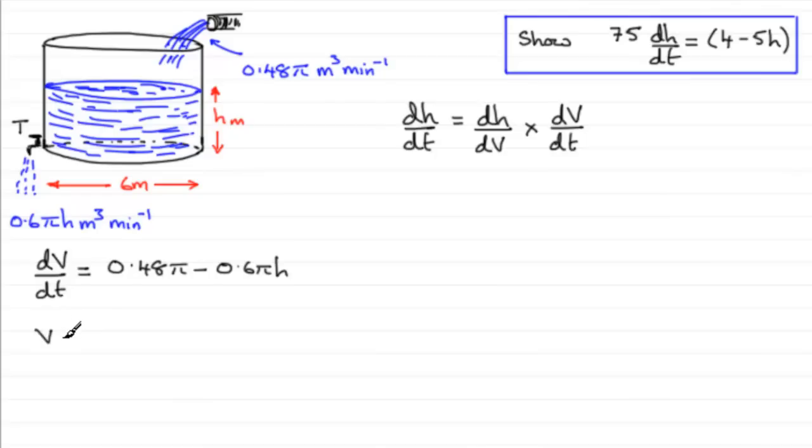And that would be the volume of this blue cylinder if you like. And being a cylinder, that volume is going to be equal to the area of the cross section, the area of a circle, which will be πr², π times the radius squared. The radius will be 3, so that would be 3 squared. So that's the area of the cross section. And then we multiply it by the height.